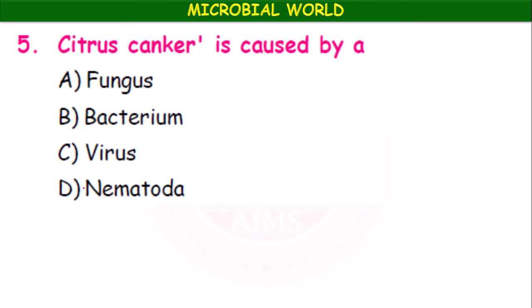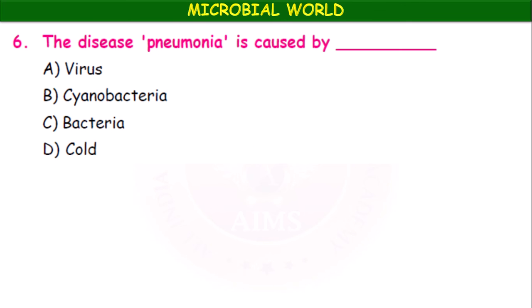Citrus canker is caused by a fungus, bacterium, virus, or nematode? The answer is bacterium. Xanthomonas citri is the bacterium which causes citrus canker disease in citrus plants. The disease pneumonia is caused by virus, cyanobacteria, bacteria, or other? It is bacteria — bacteria cause pneumonia. Pneumonia is a lung disease in which water is accumulated in the lungs.